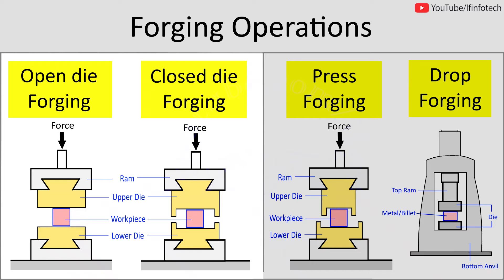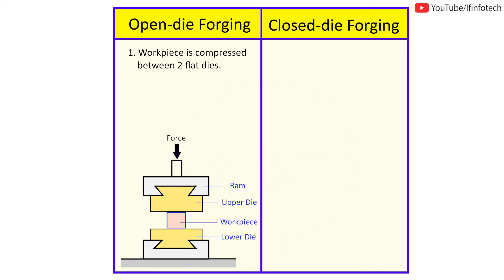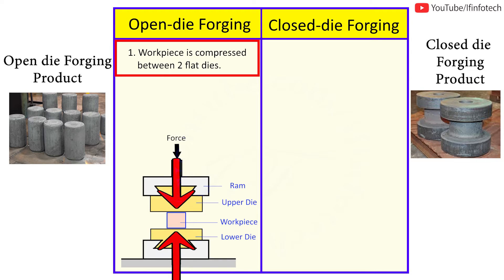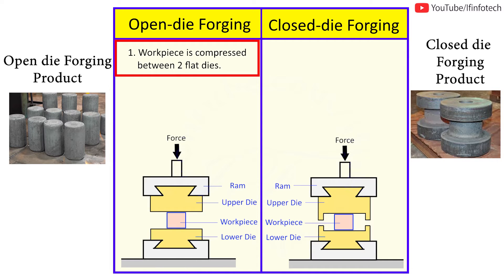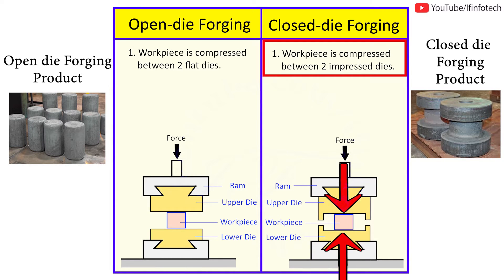In today's session, we'll learn about the difference between open die forging and closed die forging, and we'll compare drop forging and press forging operations. In open die forging, the workpiece is compressed between two flat dies, whereas in closed die forging, the workpiece is compressed between two impressed dies.